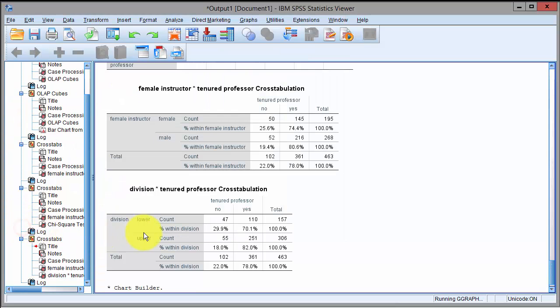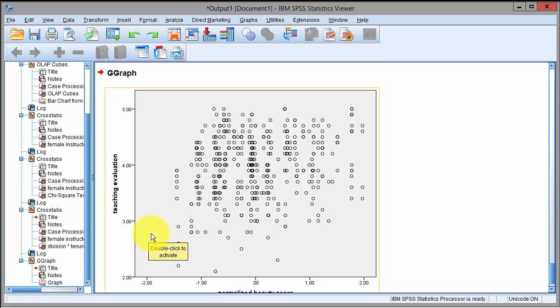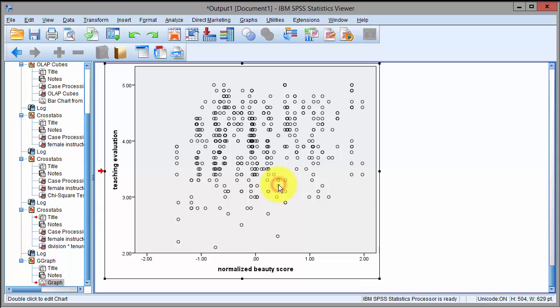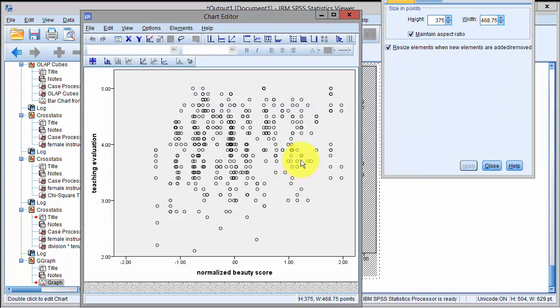We click OK and the output comes in here. And now we fit a regression line to it, so we double click on this output and click here.